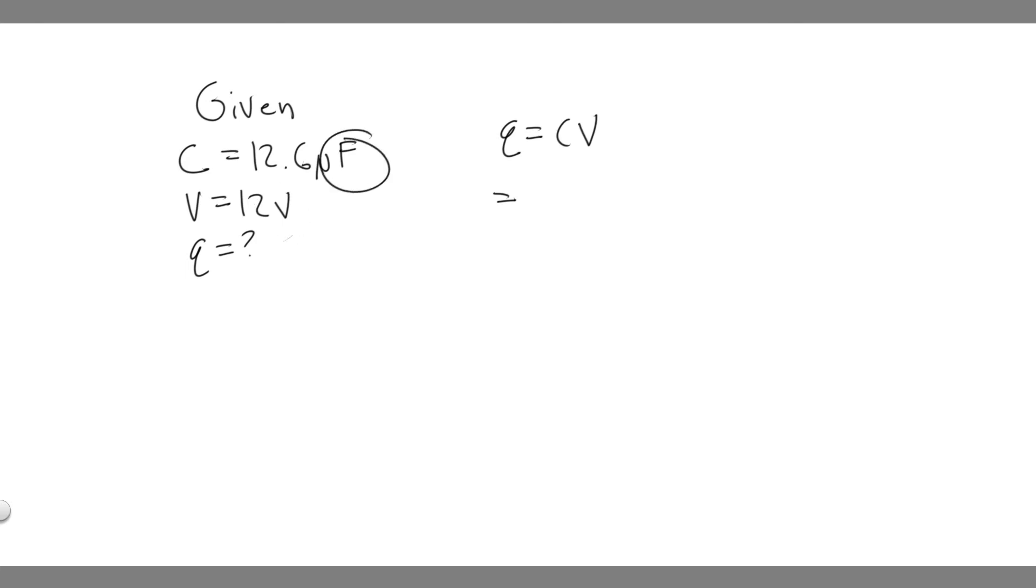So this is in volts, and then if we want to find the charge in coulombs we need to make this in farads not microfarads. And so micro just means times 10 to the minus 6, so we can just rewrite this as 12.6 times 10 to the minus 6. And so that would be in farads now.